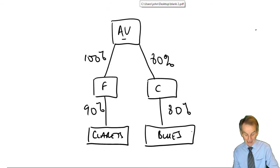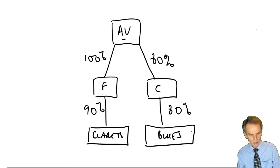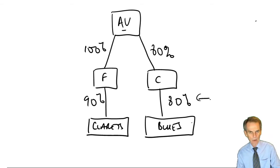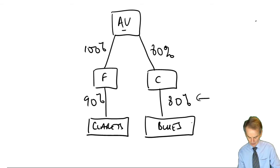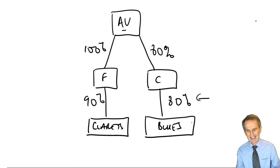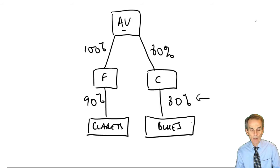Looking at the AV group: AV owns 100% of F and 80% of C, F owns 90% of Clarets, and C owns 80% of Blues. AV, F and C obviously have a 75% group relationship, so those three companies are in the same gains group. AV through F: 100% to F, then 90% to Clarets — each link is at least 75%, and 100% × 90% = 90%, which means we have effective over 50%. So Clarets is in the same gains group. The question now is about Blues. Now we only need effective over 50% — and 80% × 80% = 64%, which exceeds 50%. Therefore all five companies in the AV group are in the same gains group.